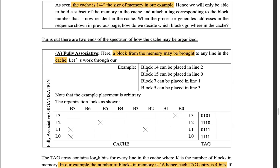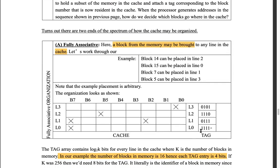So you might be storing block 14 in line 2, block 15 in line 0, block 7 in line 1, and block 5 in line 3. In that regard, the tag stores the block number — it works as a lookup table. Every block has been tagged. So if you want to look into L3, the tag for L3 is 0101, which means block 5. The tag is how the CPU checks whether the target destination is already in the cache.